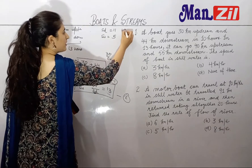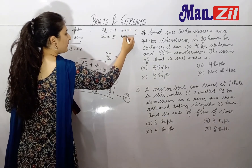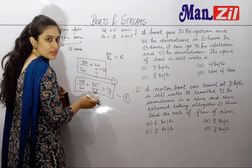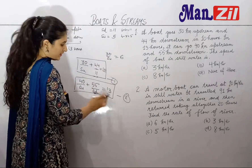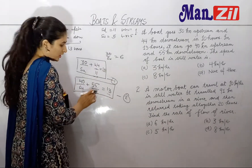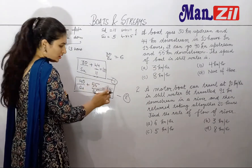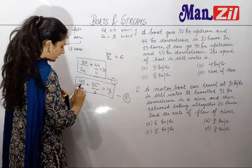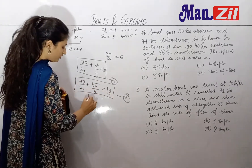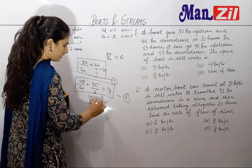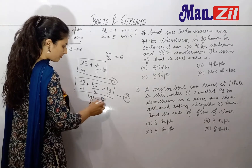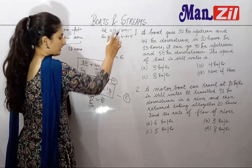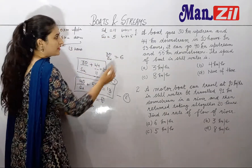That means b plus r equals 11 and b minus r equals 5. If we put 11 here for downstream speed, then we subtract from 13, giving us 8. So 40 upon speed of upstream equals 8, which gives speed of upstream as 5. Speed of upstream is 5 and speed of downstream is 11, and both satisfy the equations.